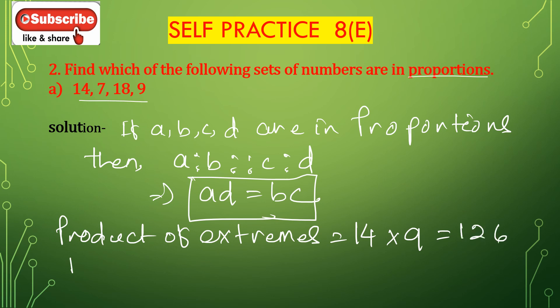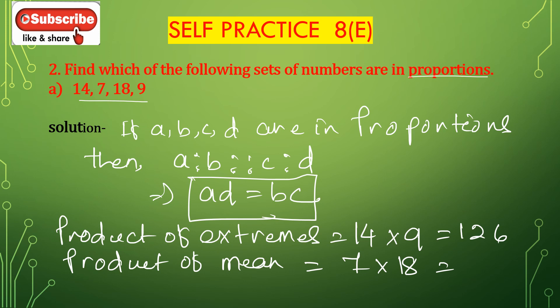Product of extremes: 14 multiplied by 9 equals 126. Product of means: 7 multiplied by 18 equals 126. Since product of extremes equals product of means, these sets of numbers are in proportion.